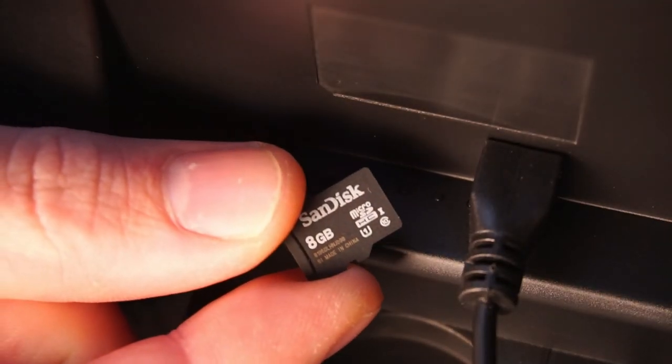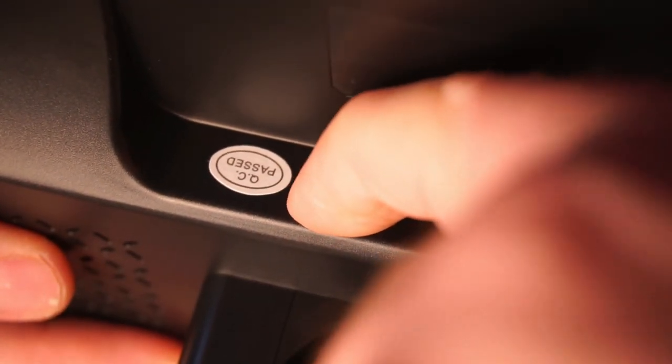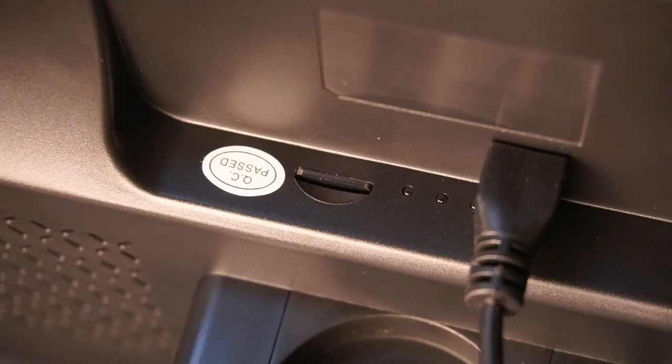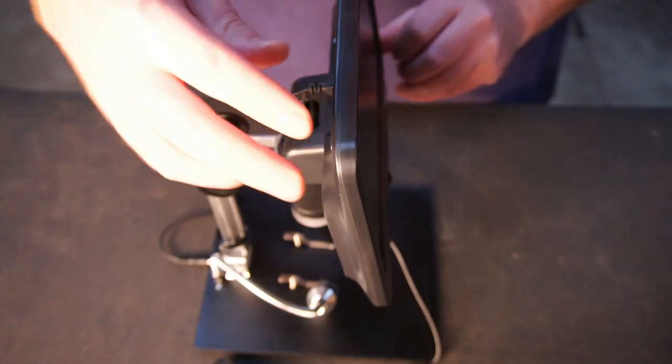At the back of the screen is the option to install a micro SD card, which enables you to record videos and capture photos. The screen has a good range of motion, with the option to tilt and rotate.